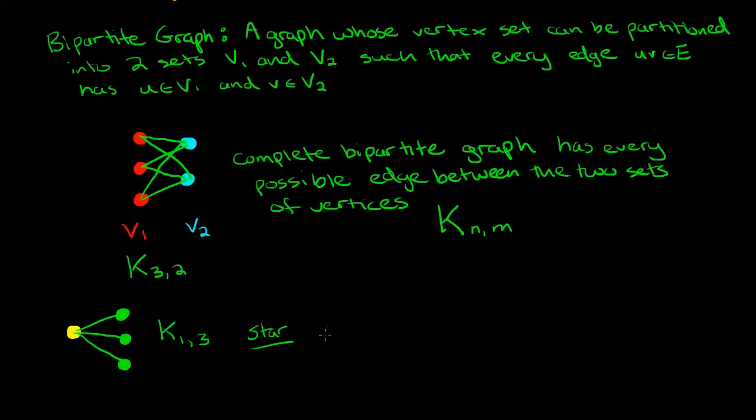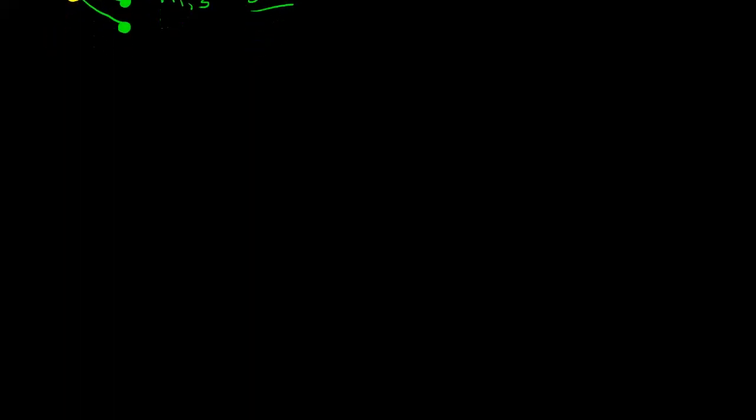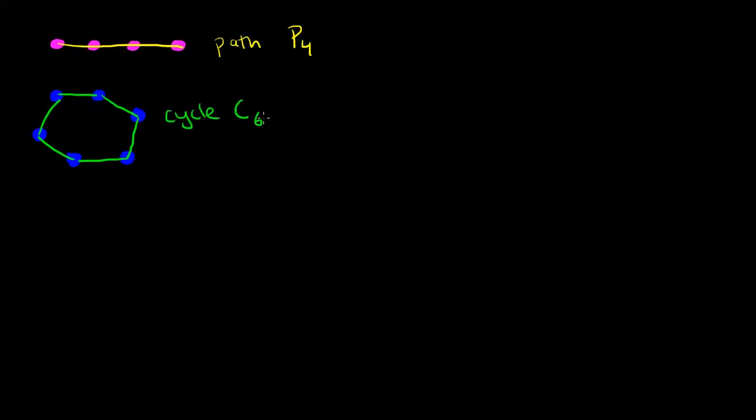Our next category of graphs to look at are paths and cycles. What I'm going to do is first draw a path, and draw a cycle, and then define them for you. Here I've drawn a path, and I've denoted it by P sub 4. Here I've drawn a cycle, which I've denoted by C sub 6. Notice that the subscript tells you how many vertices are in the path or in the cycle. In the cycle, there are the same number of edges as there are vertices, whereas in the path, here we have four vertices, but only three edges. That's always true, there's always going to be one fewer edge than vertex in the path.